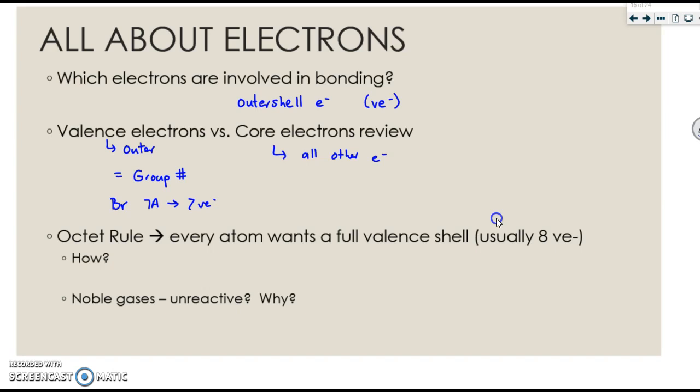We have something called the octet rule. The octet rule says that every atom wants a full valence shell, which is usually 8 valence electrons. They can get these electrons by gaining, losing, or sharing them. Our main focus in this part of the chapter is on the sharing of electrons. Our noble gases are unreactive because our noble gases are 8a, so they already have 8 valence electrons. Since they already have a full shell, they don't want any more, so they don't participate in bonding.